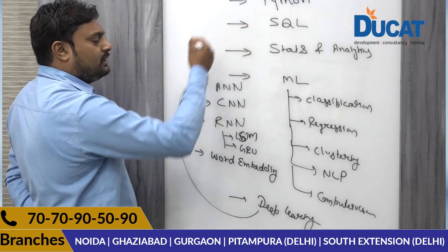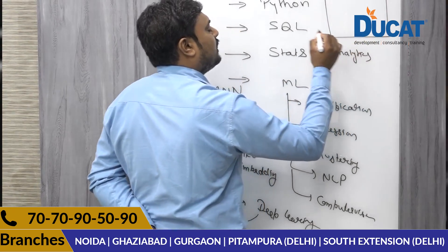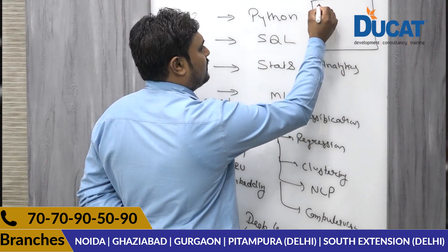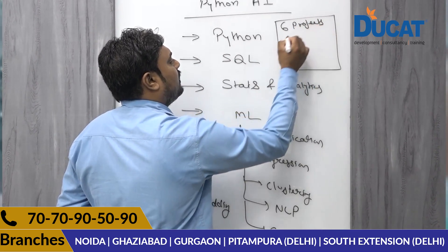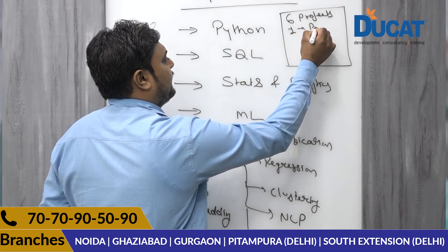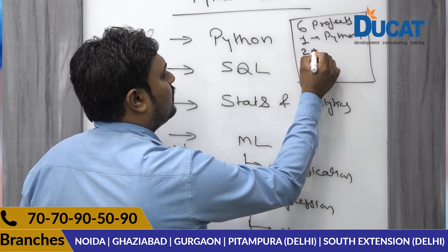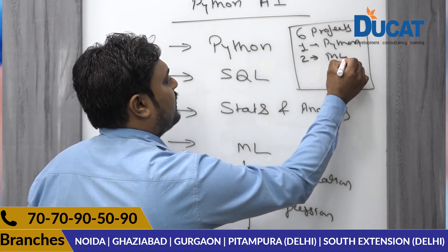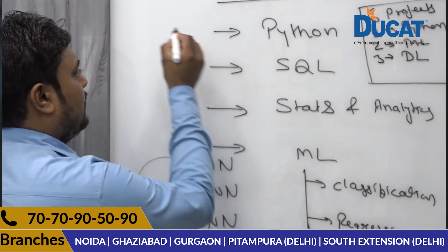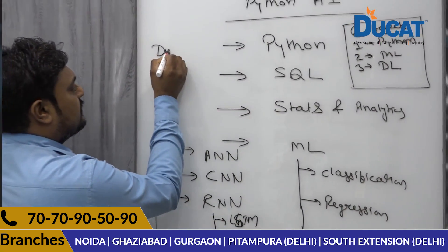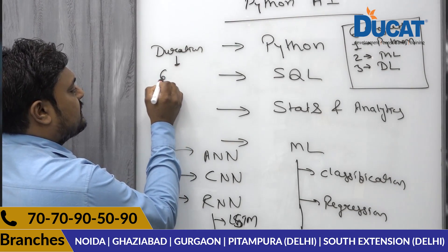We will be doing all these things in this Python AI course. In this course we will be doing six projects: one project in Python, two projects in machine learning, and three projects in deep learning. The duration of this course is six months.